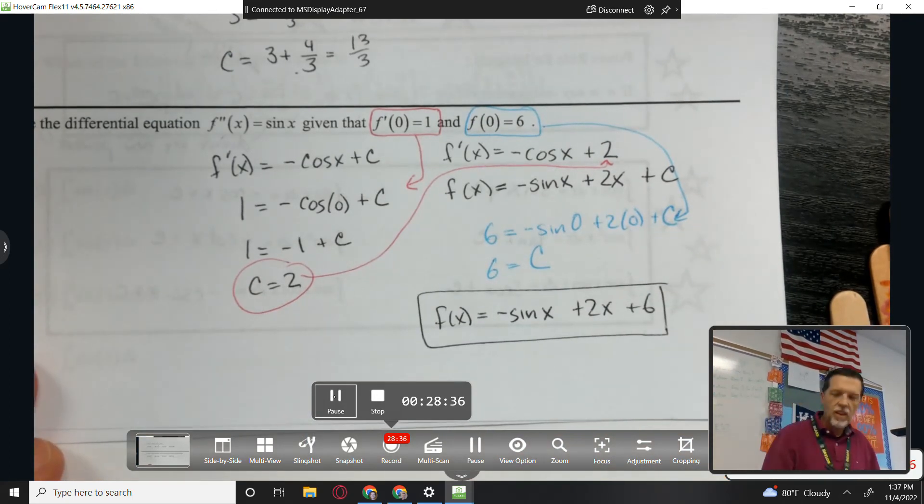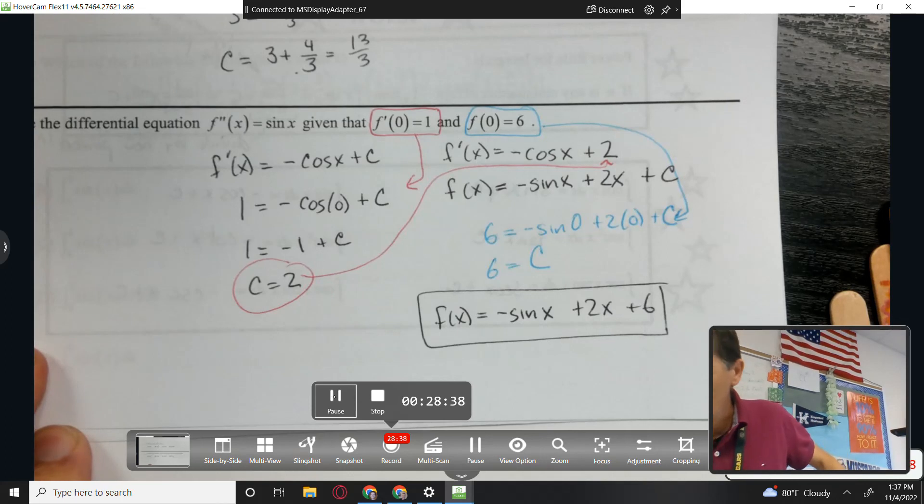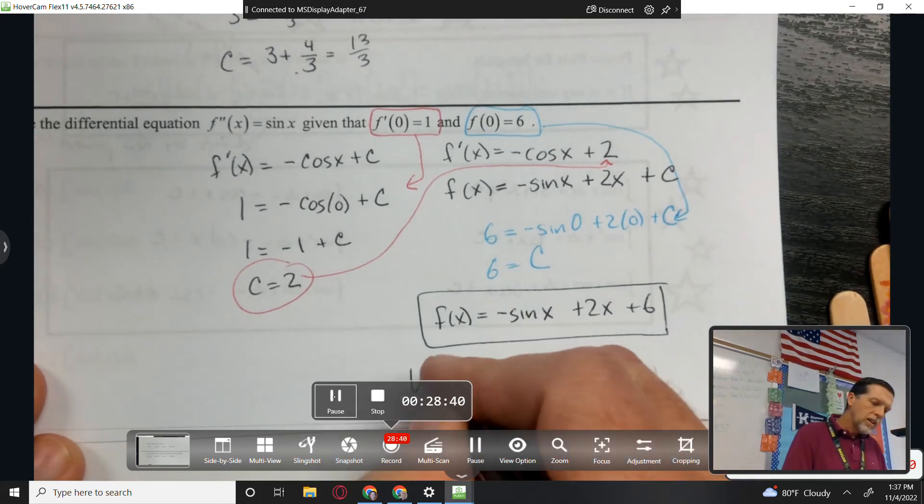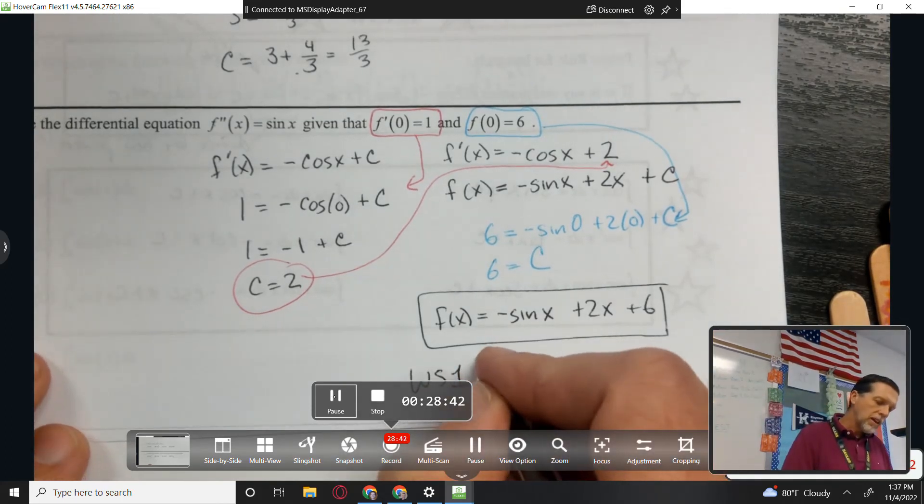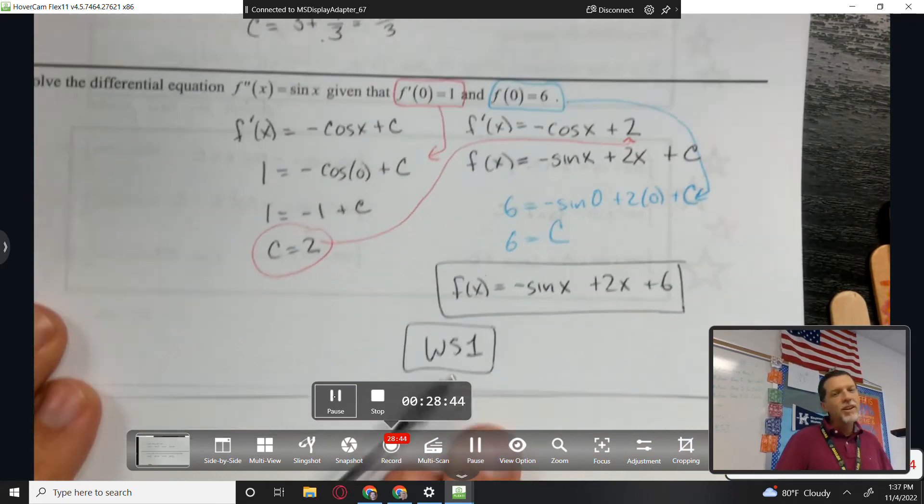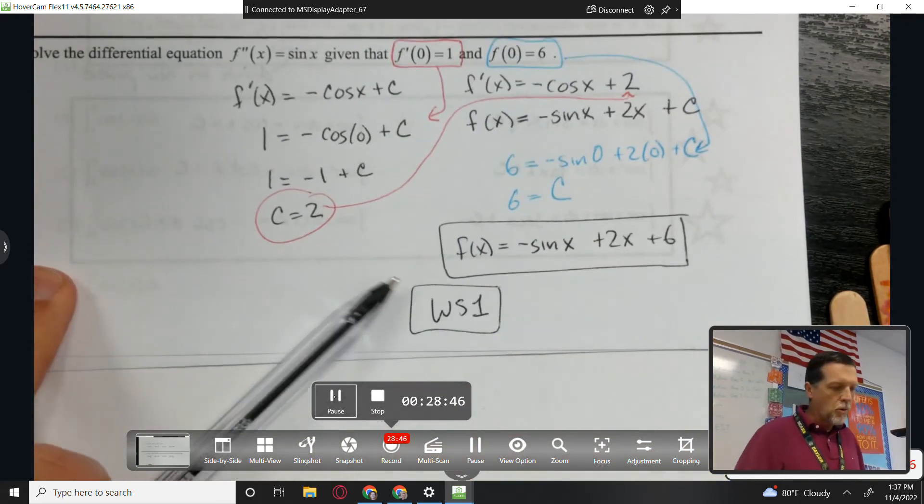All right, your assignment is just worksheet 1. Pretty straightforward, I think. Again, as long as you know the forward rules, going backward isn't too bad yet.